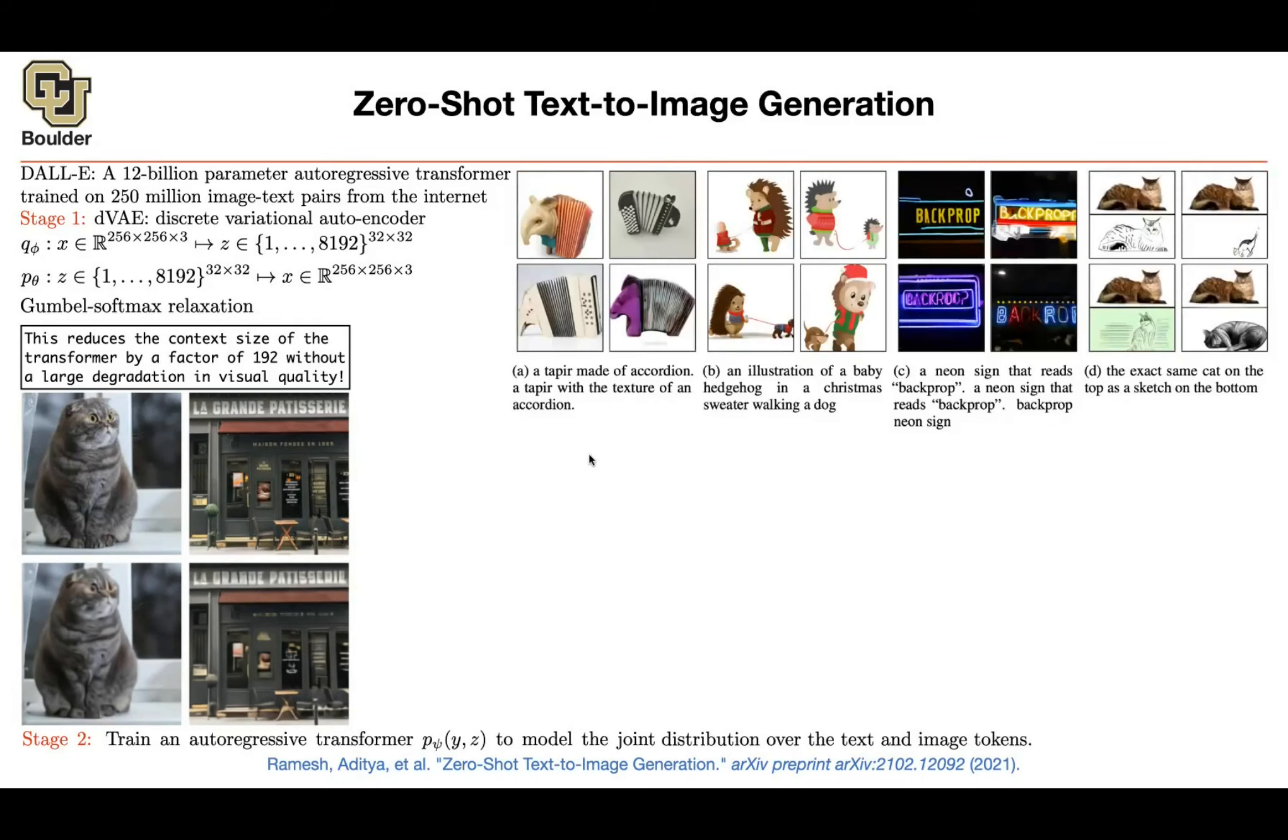And then some cool stuff is going to come out. If you condition on a tapir made of accordion, these are the images that are going to get generated. So it's starting to imagine imaginary images. A baby hedgehog in a Christmas sweater walking a dog. And these are the images that the network generates. A neon sign that reads back prop.